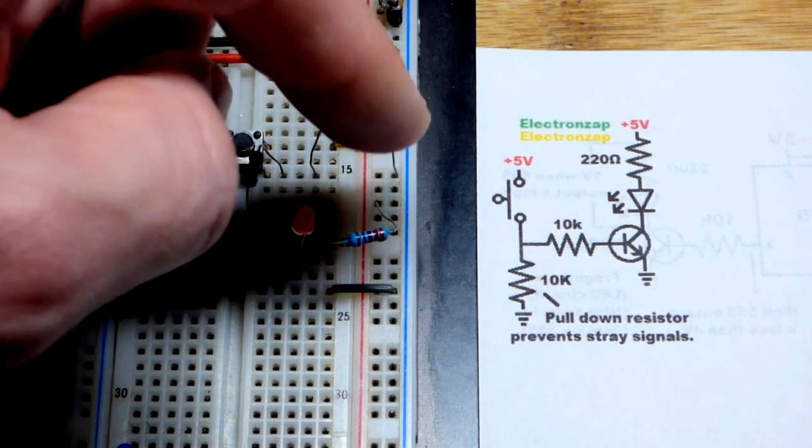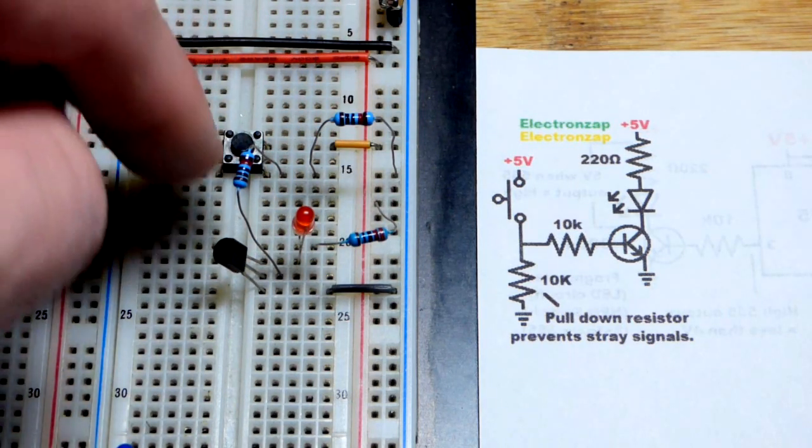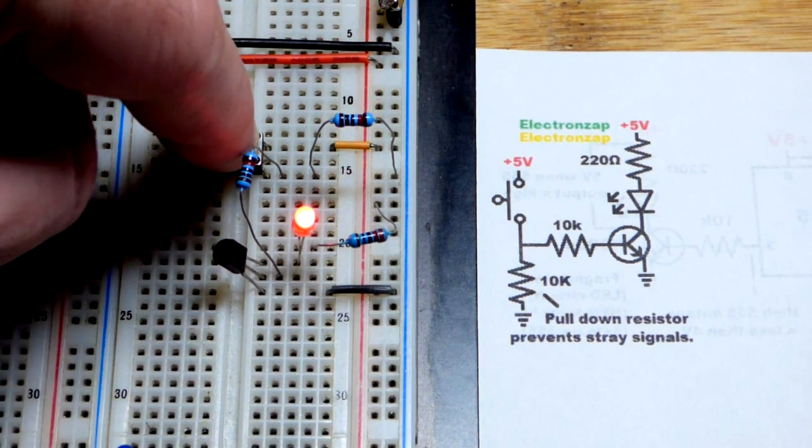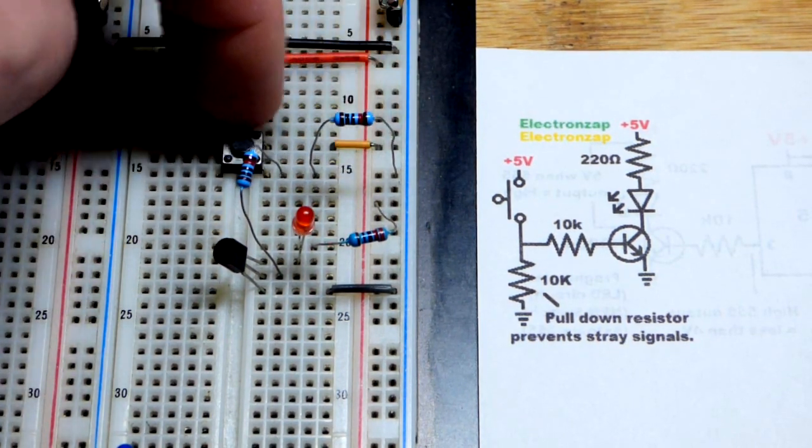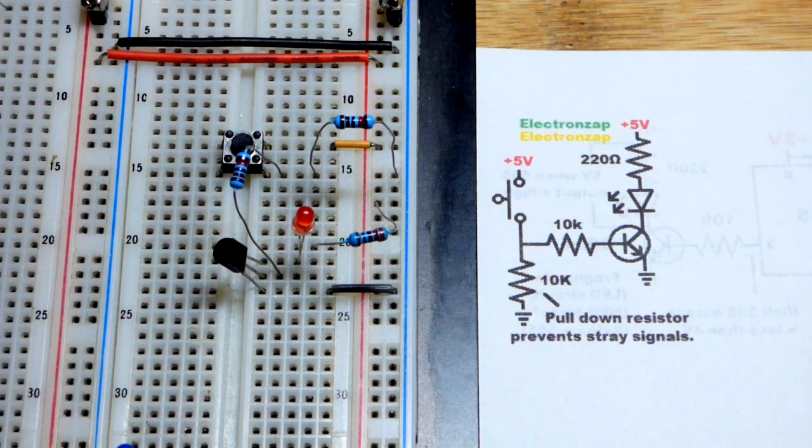So, here you can see that we're to the negative supply, that helps hold the transistor off. But the switch, when I connect the top and the bottom pins together right there, we have a direct connection to the positive supply. So, that doesn't take any energy from the transistor.